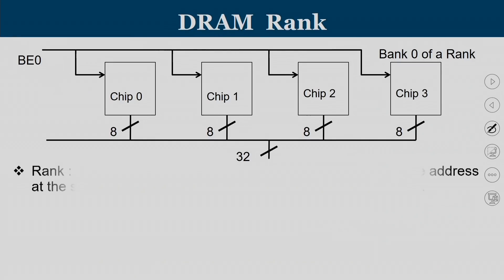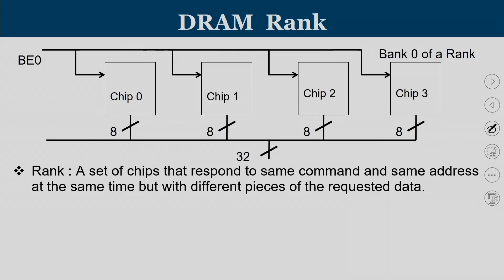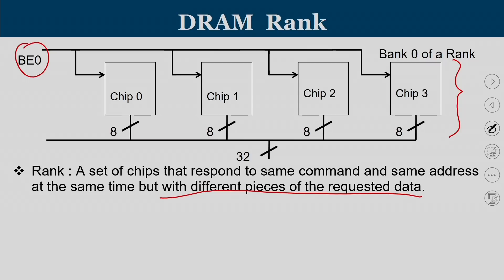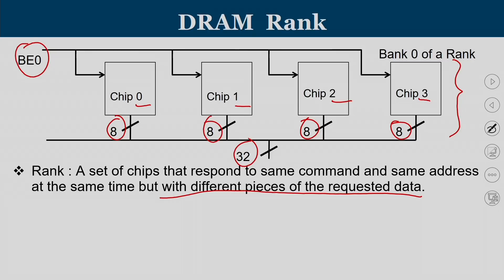What is a DRAM rank? A rank is a set of chips that respond to the same command and same address at the same time, but with different pieces of the requested data. A common command is given to the entire rank — which in this example consists of 4 chips (chip 0, 1, 2, and 3). Each chip returns 8 bits of data, and together we get 32 bits. In short, a rank is chips responding to the same command and address simultaneously but returning different pieces of data.